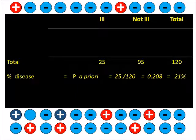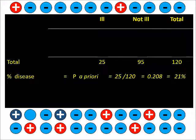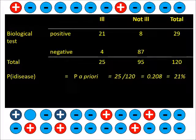We know that there are 25 ill out of 120 subjects, so the frequency of the disease can be considered as an a priori probability of being ill, which is here 21%. Among all the subjects,